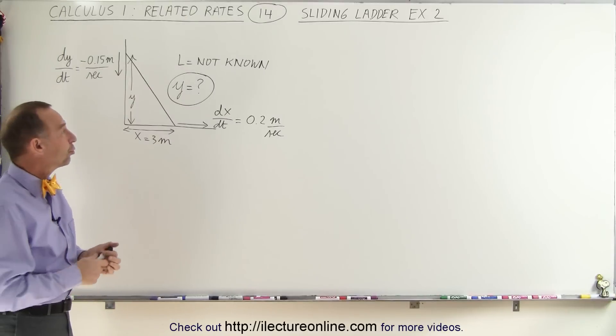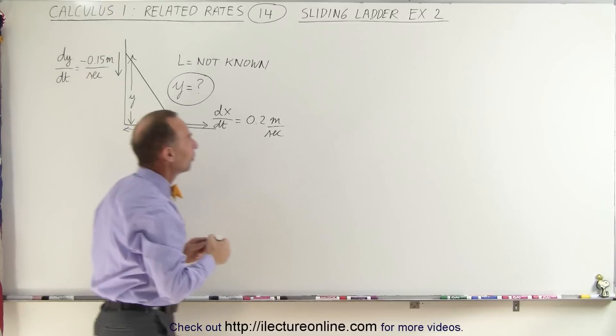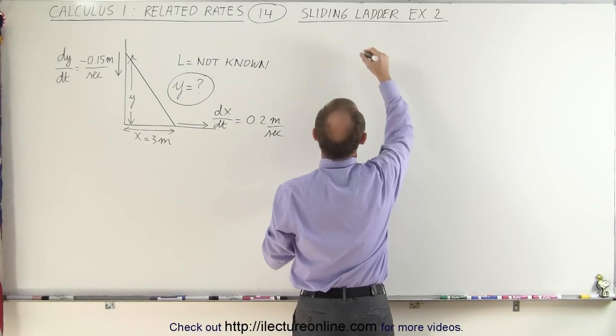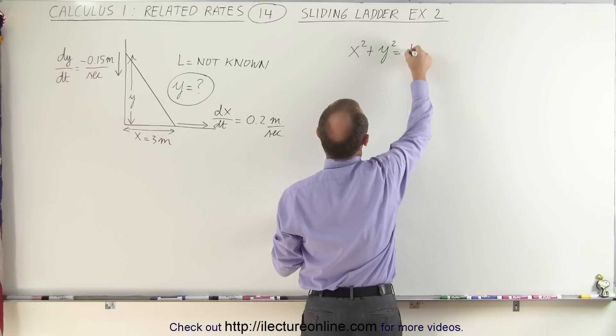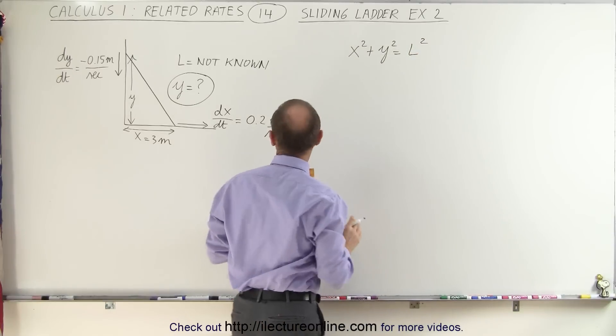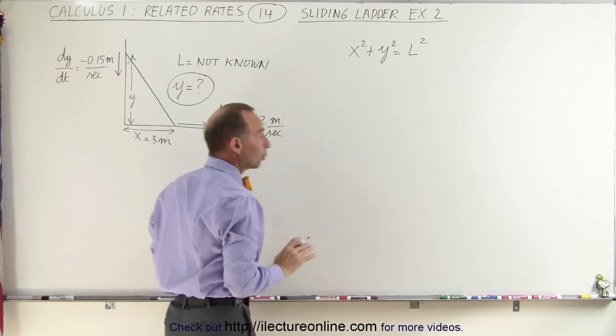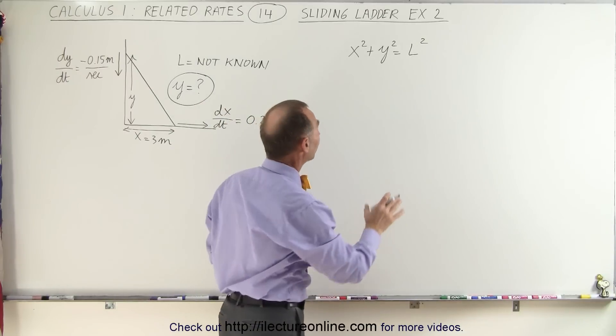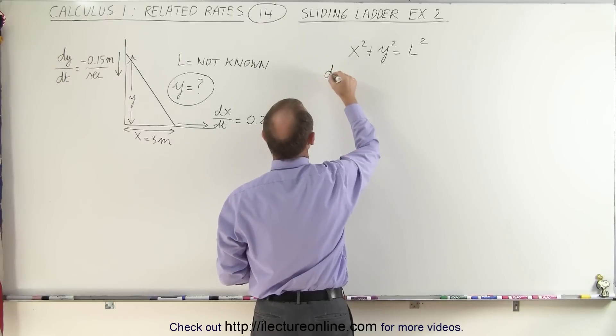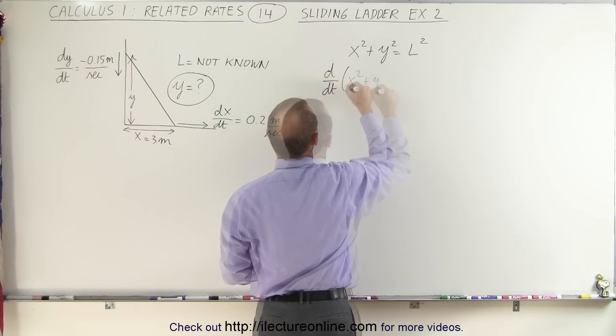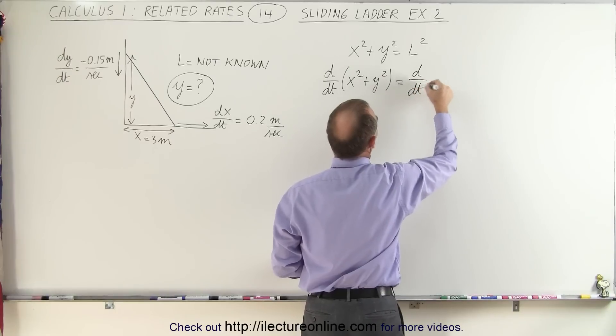We're going to use the same approach. We're going to use Pythagorean theorem to relate the three sides. We can then say that x squared plus y squared equals L squared. And since we're given the rate of sliding both in the x and the y direction, we're going to take the derivative of this equation with respect to time on both sides. So we get d/dt of the left side, that must equal d/dt of the right side.